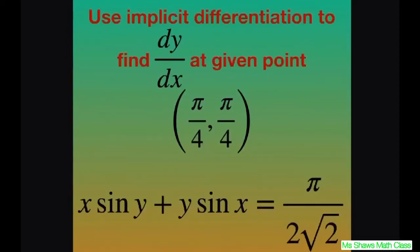Hi, everyone. We're going to use implicit differentiation to find the derivative of y with respect to x at a given point. Our point is π/4 comma π/4, which is 45 degrees.